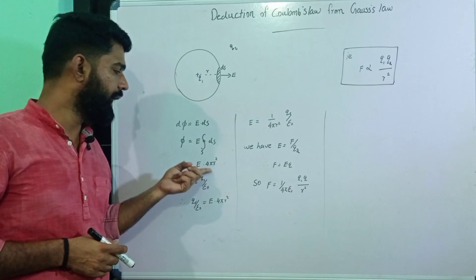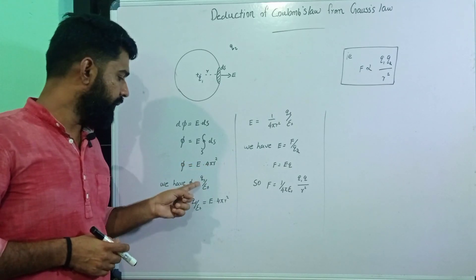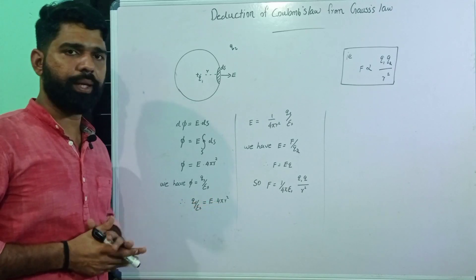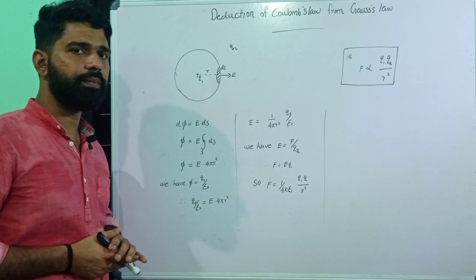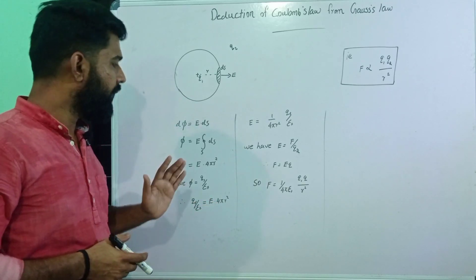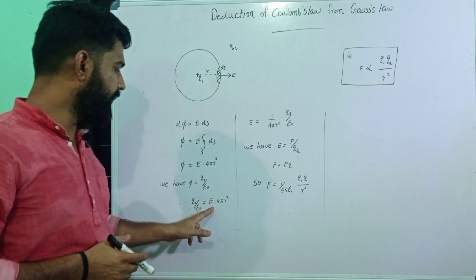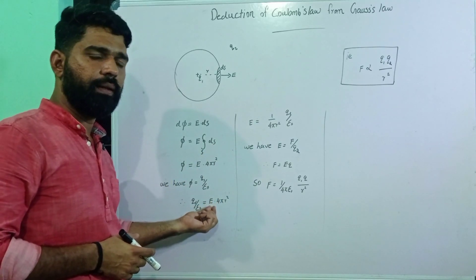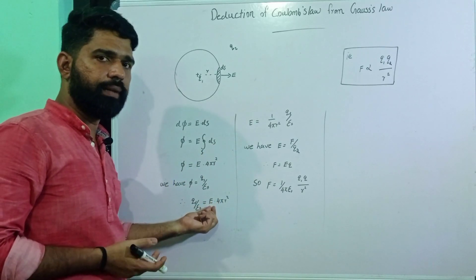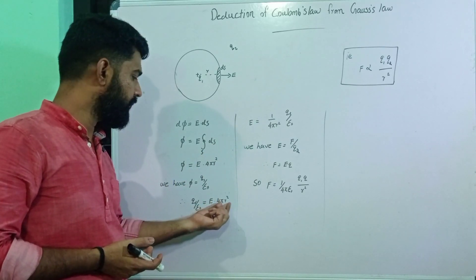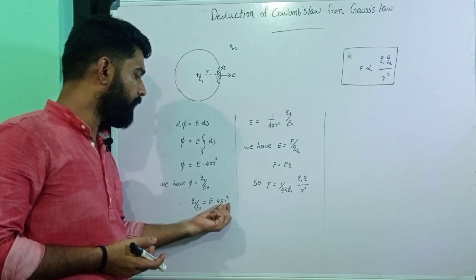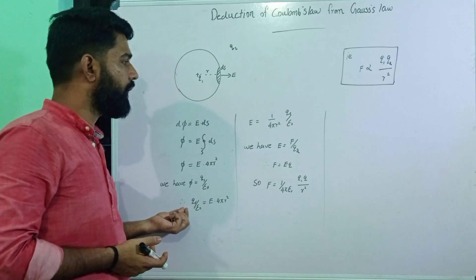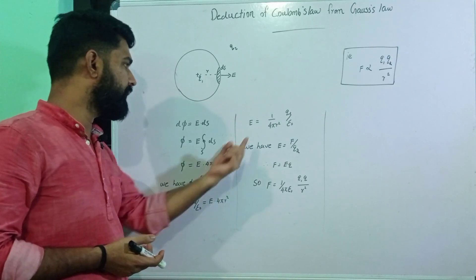So from this, q1 by epsilon-naught is equal to E times 4πr², and therefore E is equal to q1 divided by 4π epsilon-naught r².